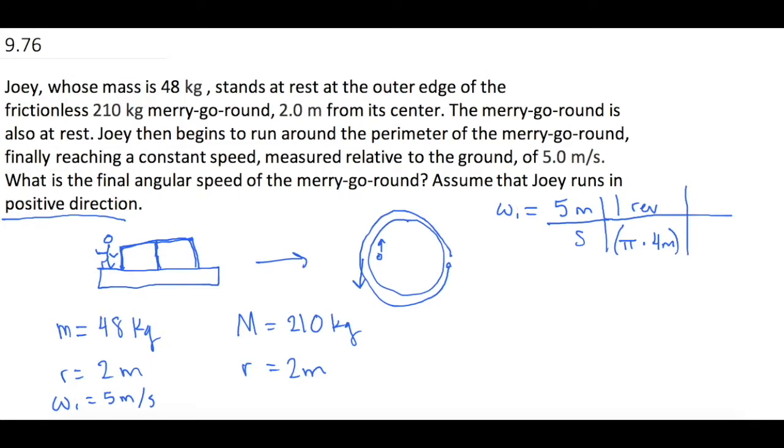Then we want in one revolution there are 2 pi radians. So now we have radians on top, seconds on bottom, the meters cancel out, the revolutions cancel out, and we are left with what we want. So when we plug all this in, omega initial is now equal to 2.5 radians per second.